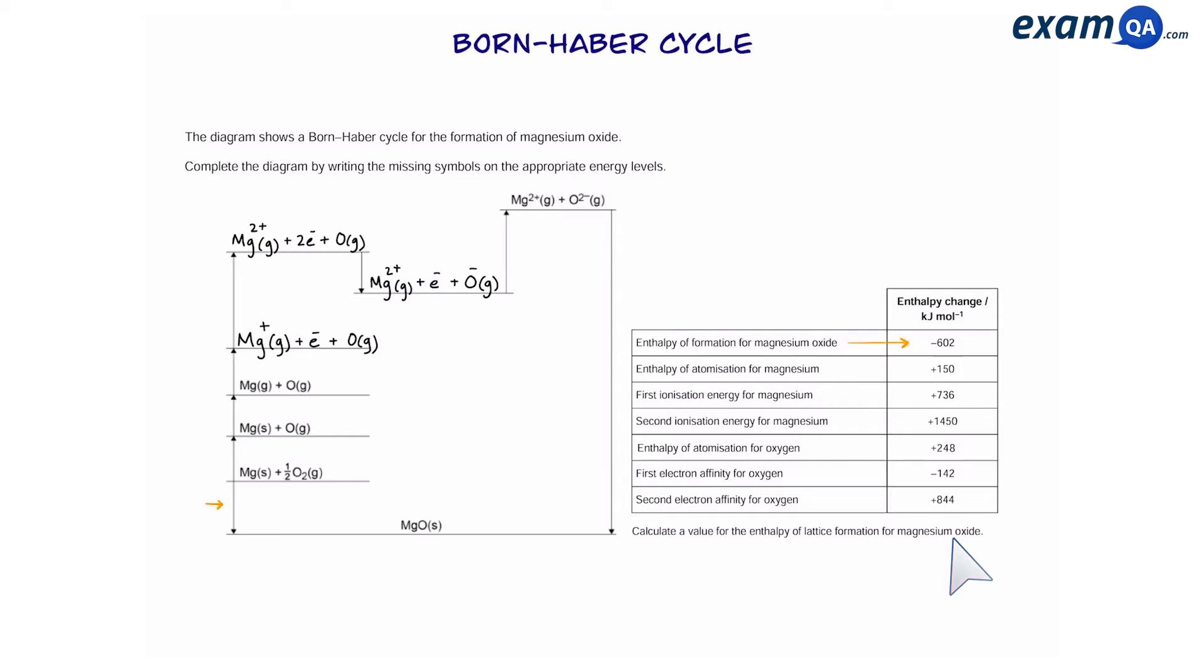So, let's start with this arrow on the left. Enthalpy of formation of Magnesium Oxide is minus 602. OK, let's do this arrow now. So, we have atomisation of Oxygen which is 248. Here we have the atomisation of Magnesium which is 150. And we keep on going through the cycle and putting in the values that they've given us from the table to complete the cycle.